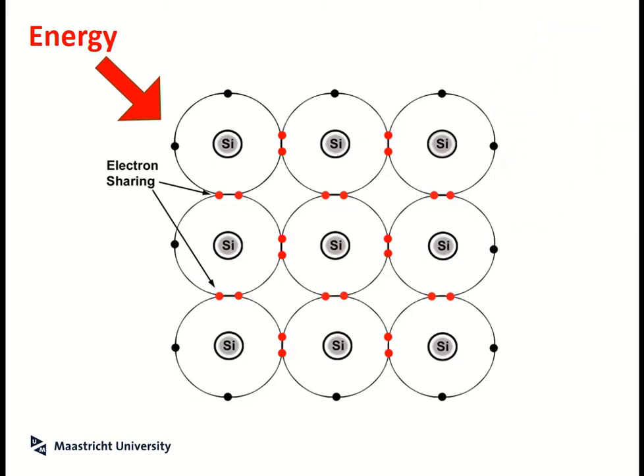then some of these electrons will get enough energy that they will break free from those bonds and they will essentially enter the material. So they won't be associated with a single silicon atom or a silicon nucleus anymore, but they will become free and delocalized in the same way that you have free electrons in a metal.